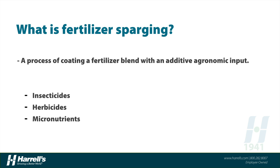Most commonly, that can be things like herbicides — pre-emergent herbicides specifically — insecticides, or even micronutrients, and in some cases fungicides, so that when you apply the granular fertilizer, you're also getting the additive benefit of these added materials.